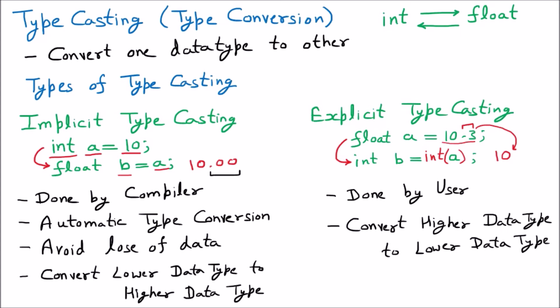And yes, there may be loss of data. Why have we mentioned maybe? Because if you have float 10.00 and you're converting to integer 10, then there is no loss of data. But if 10.3 is converted to 10, there is loss of data. So we have mentioned maybe.